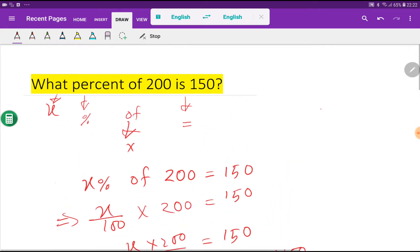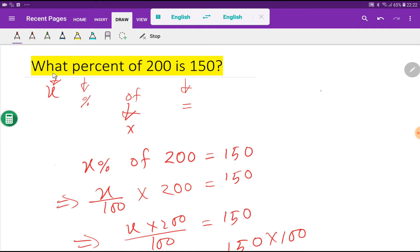So let me prove that the answer is 75 percent. What percent? That is 75 percent. Of 200, 75 percent of 200 equal to 150. Let me prove that 75 percent of 200 equal to 150.